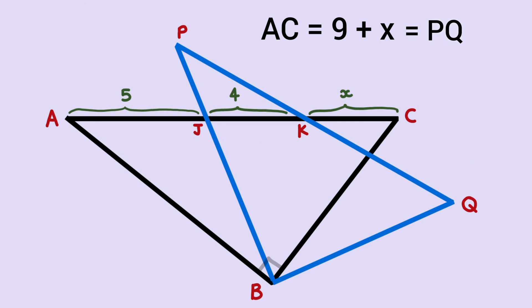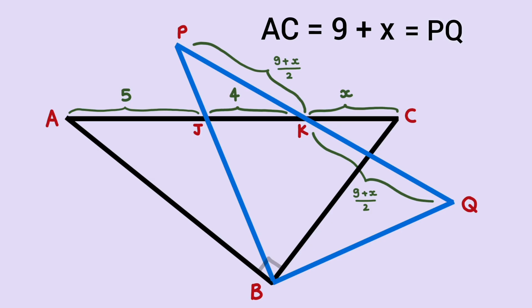The question arises: why are these triangles congruent? This is because the blue triangle is just a rotation of the black triangle from the fixed point B. Hence the blue triangle is congruent to the black triangle. Now AC has length 9 + X, so PQ also has length 9 + X. Since K is the midpoint of line segment PQ, the length of PK equals 9 + X over 2, and the other half is also 9 + X over 2.